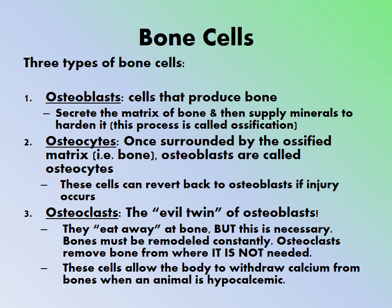Once surrounded by the ossified matrix, osteoblasts become osteocytes. These cells can actually revert back to osteoblasts if an injury occurs, continuing the ossification process — which is how a fracture heals.